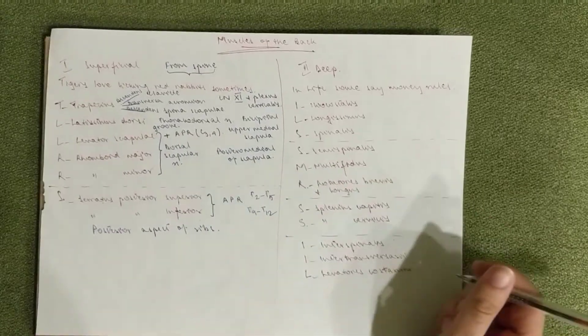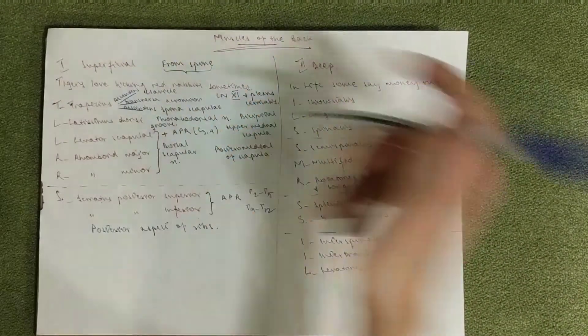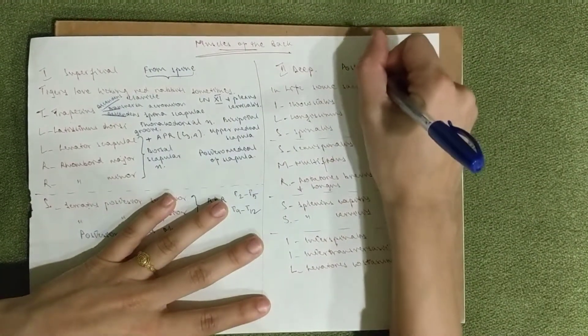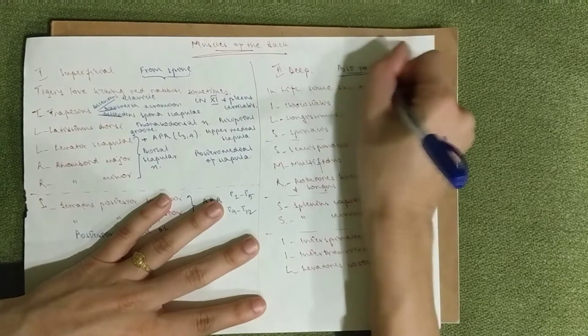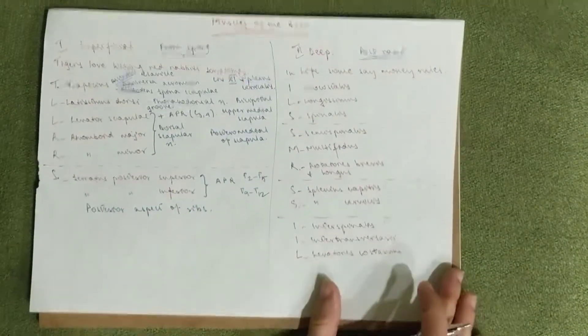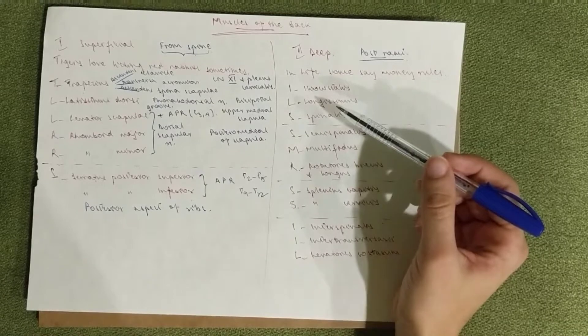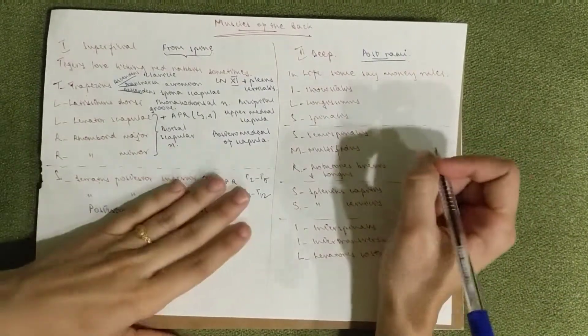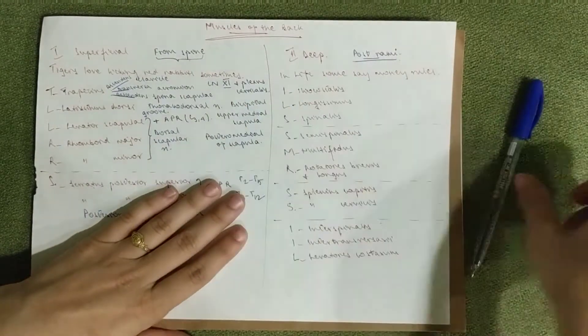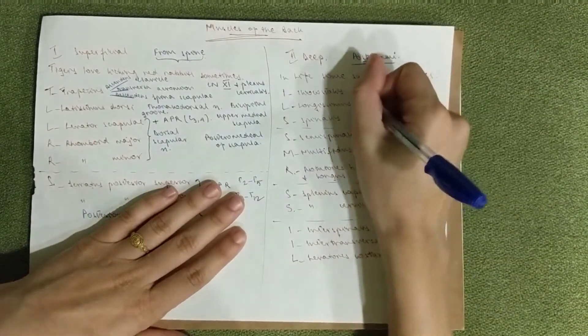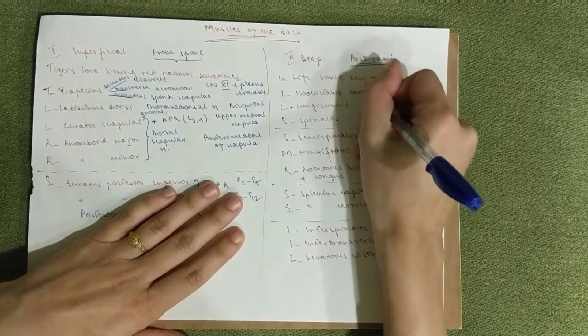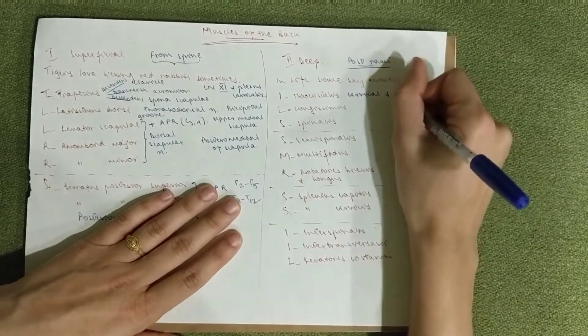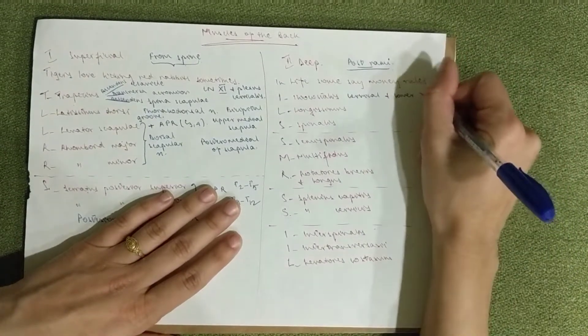Let's start. All of them are innervated by the posterior rami, so that's the good news here. Most of them go to the spine as well. The iliocostalis goes to the cervical and the lower rib angles. So insertion would be the lower rib angles.